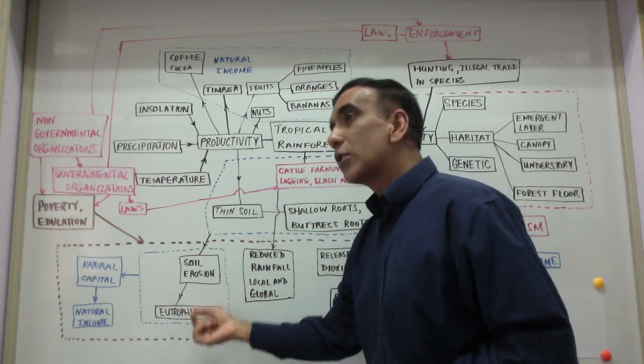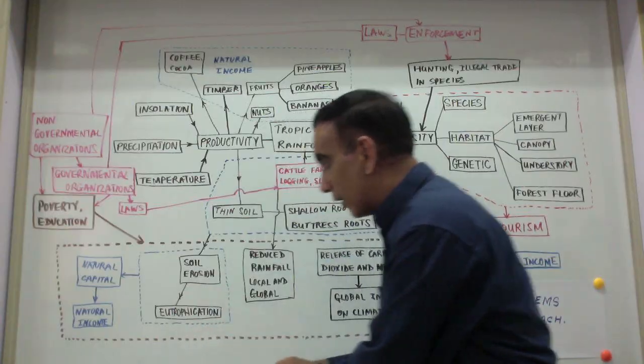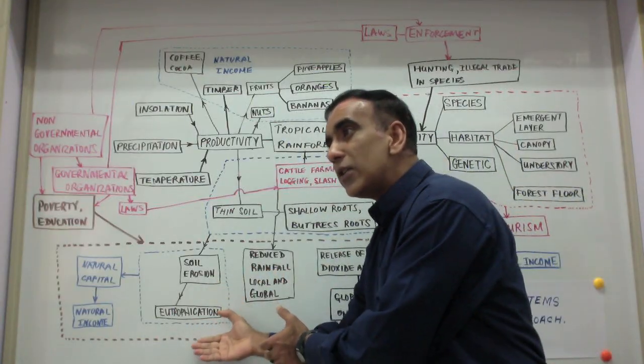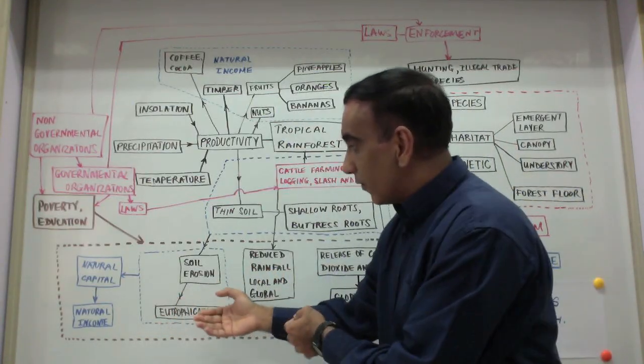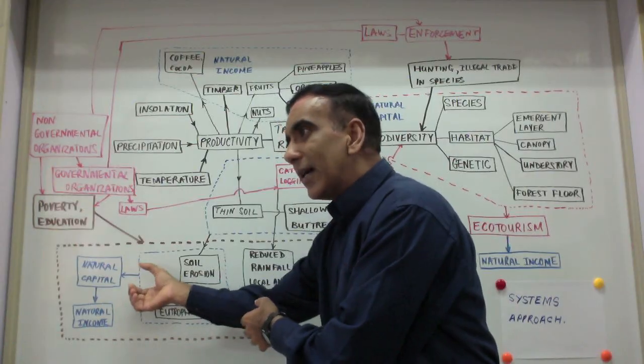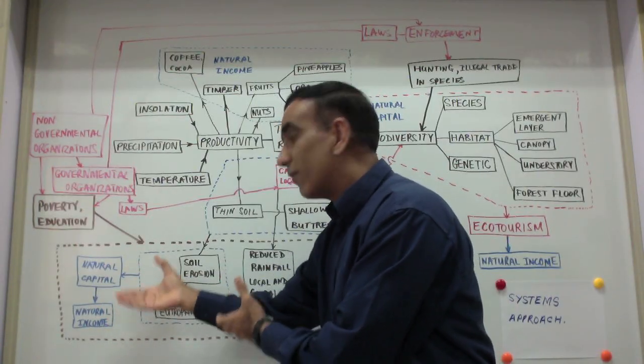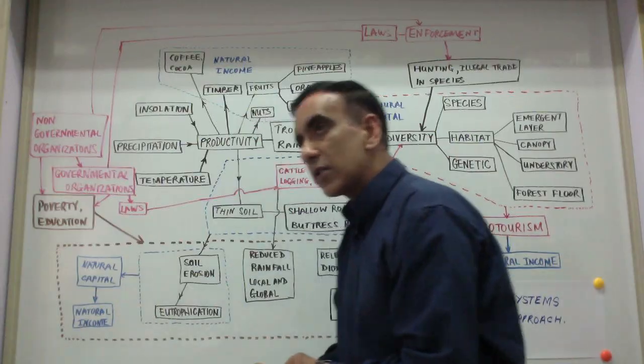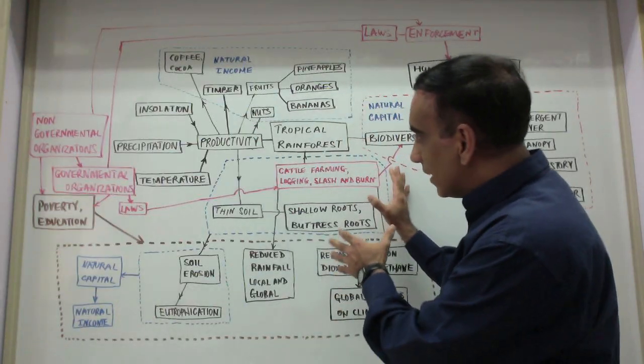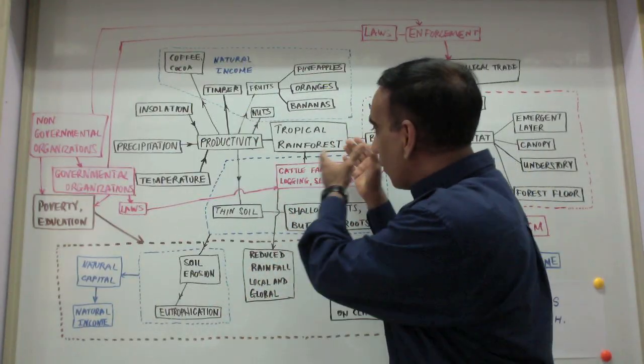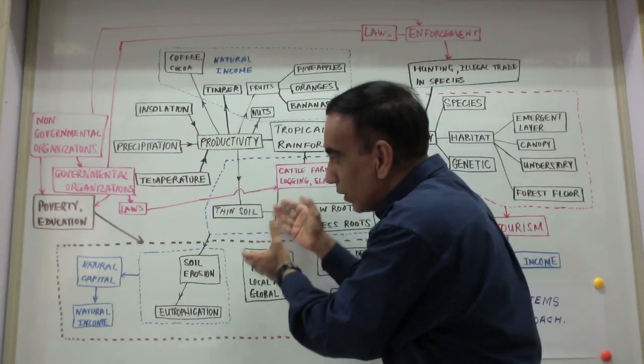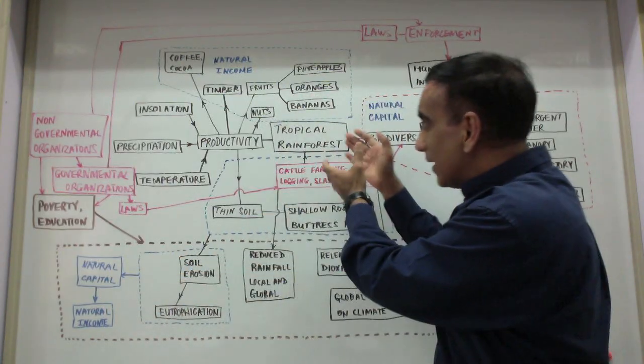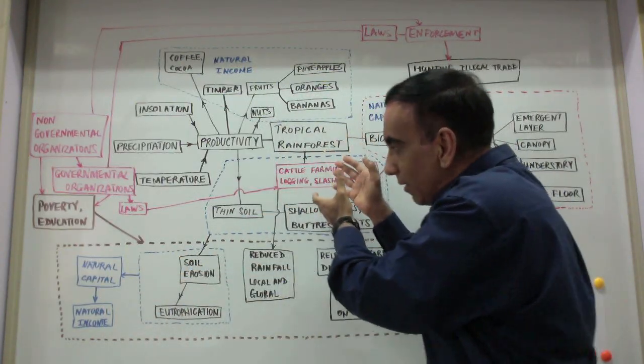This soil erosion can then be connected to another topic of eutrophication, which in turn can then lead to further loss of natural capital as waterways lose their value and the income that they can generate is also lost. So here you can see a cascade, a domino effect, from one issue into another and into another.